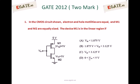For the given CMOS circuit, electron and hole mobilities are equal, and M1 and M2 are equally sized. The device M1 is in the linear region if: A. V input is less than 1.875V, B. V input is between 1.875 and 3.125V,